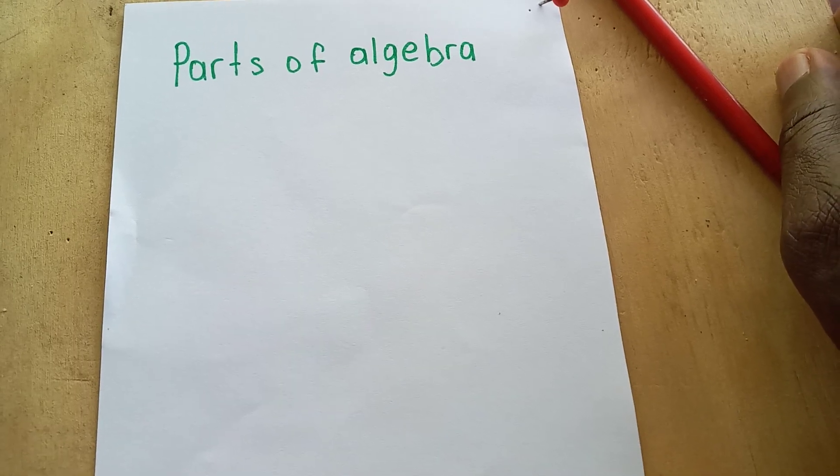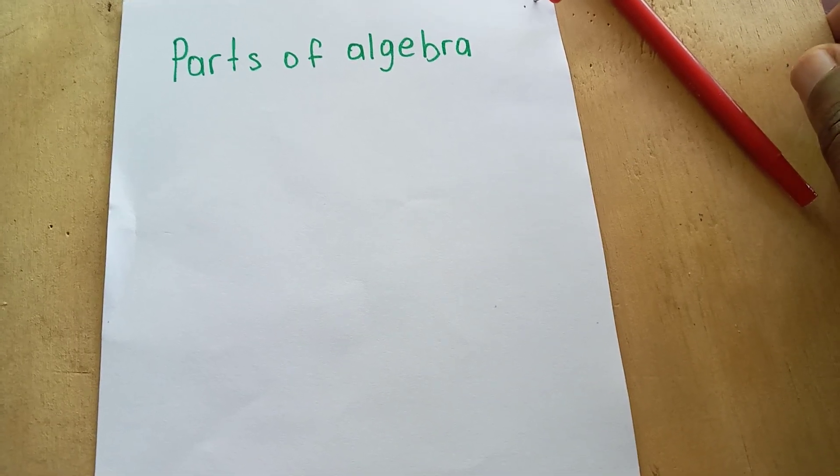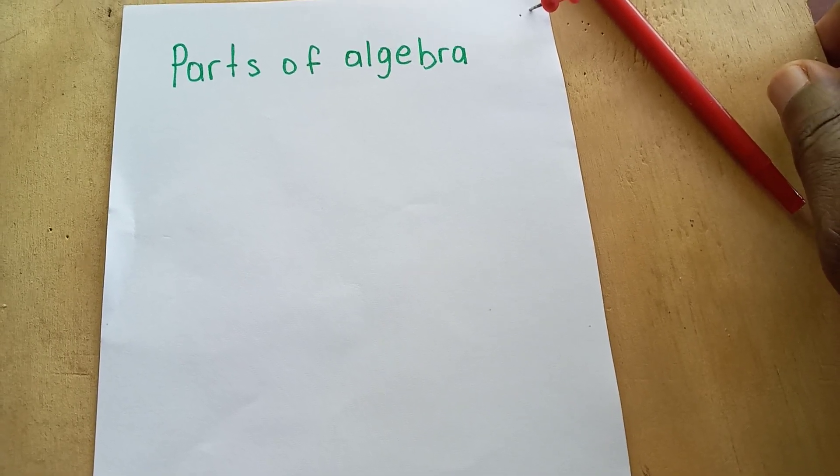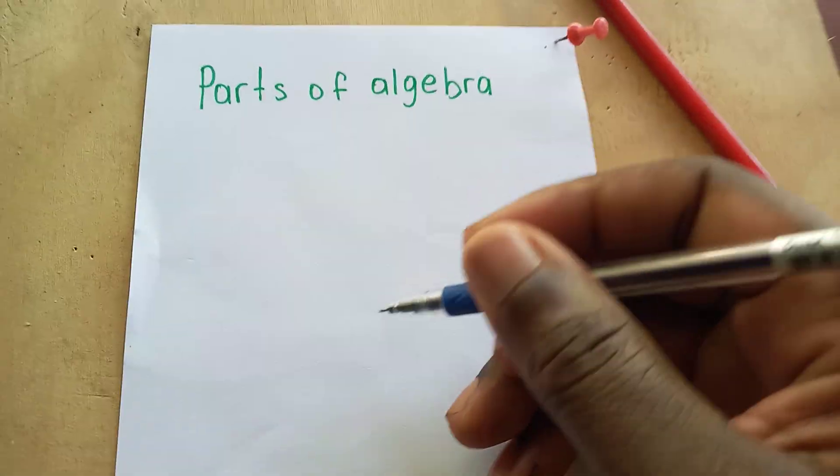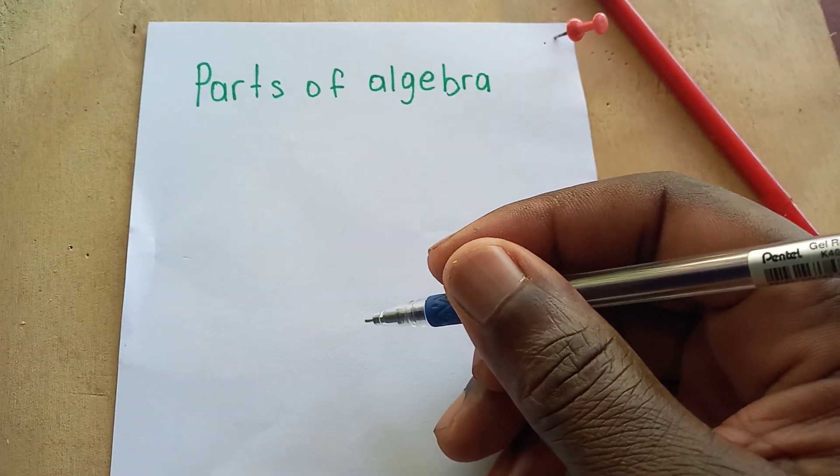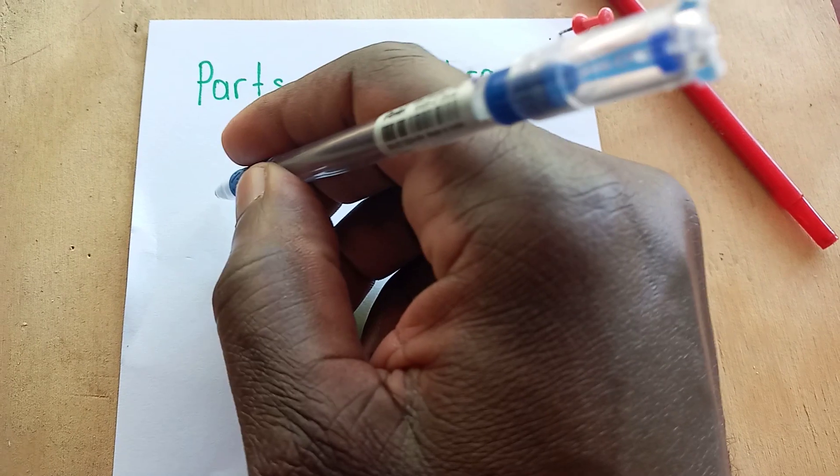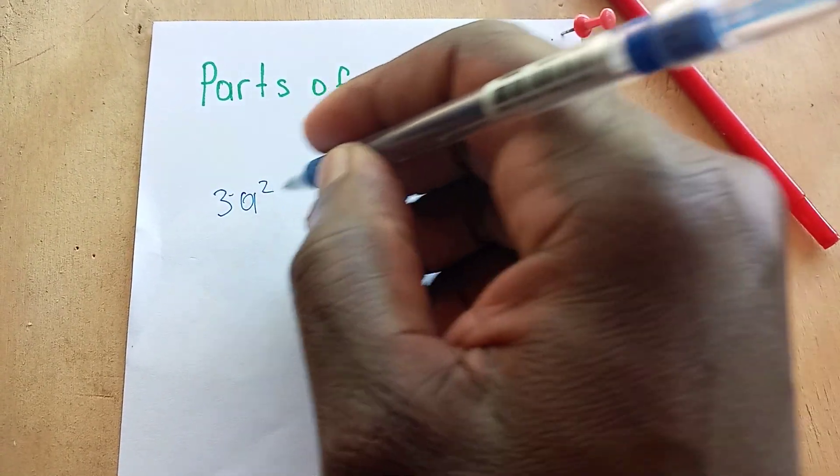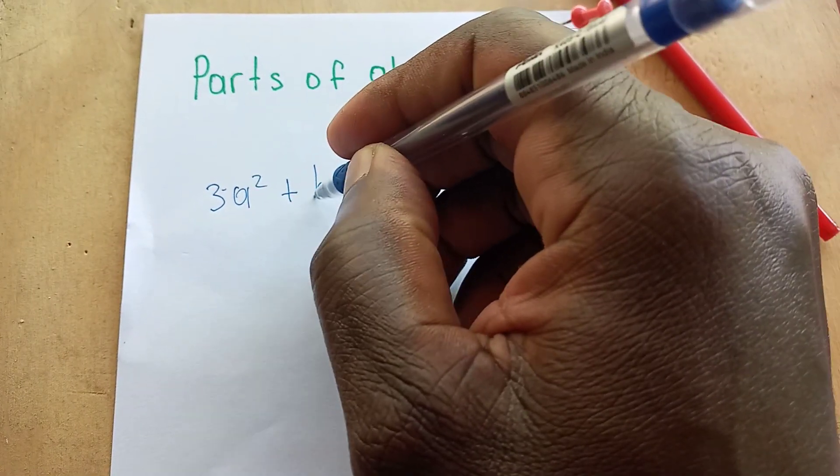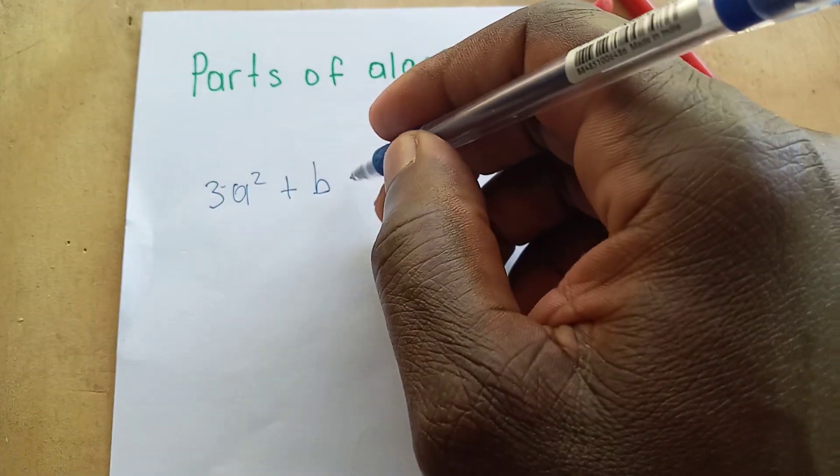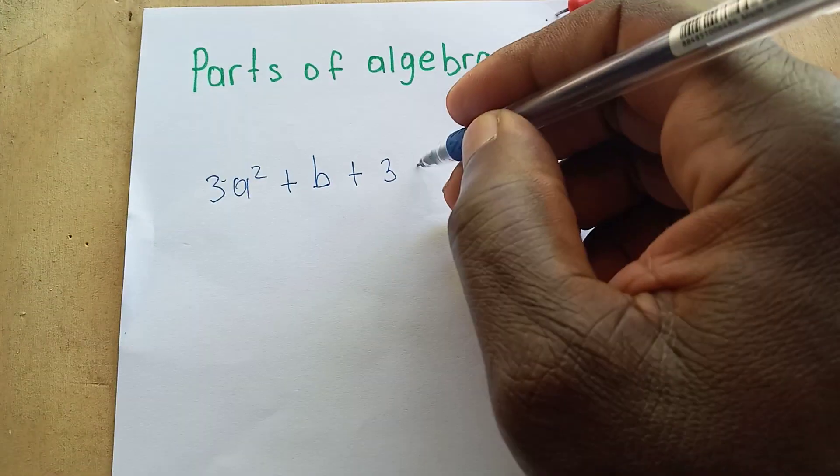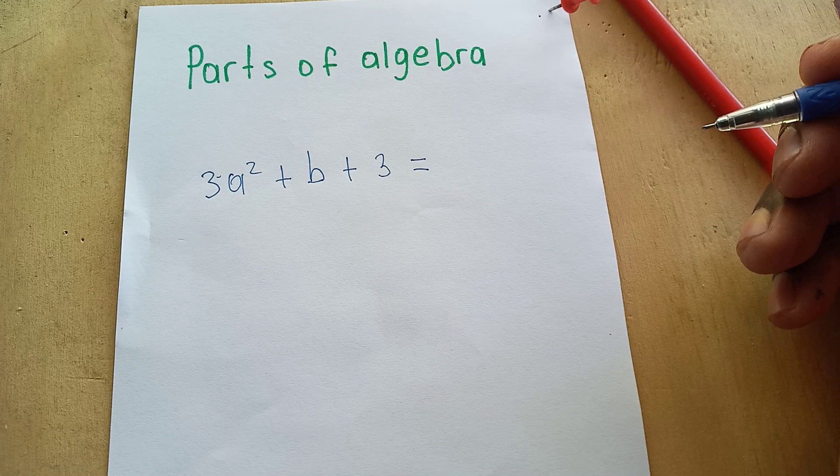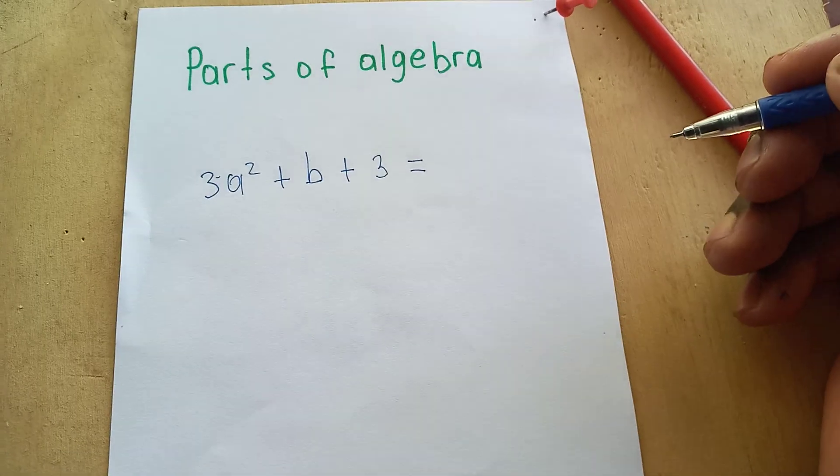In one of my videos, I gave you information on what is algebra - it's a combination of letters, numbers, and arithmetic operations. Let me write an algebraic expression here: 3a² + b + 3 equals. This is an algebraic expression equation, an algebraic equation.